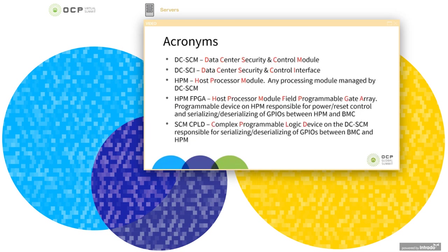Here are the acronyms. DCSEM refers to the Data Center Security and Control Module. DCSEI is the Data Center Security and Control Interface — the standardized connector interface of the SCM module. HPM is basically the motherboard or the host processing module managed by the DCSEM. The HPM FPGA is a programmable logic device on the HPM, typically used for power and reset control, with the added function of serializing and deserializing the GPIOs between the HPM and the BMC. The SCM-CPLD is a programmable logic device on the SCM, responsible for serializing and deserializing the GPIOs between the HPM and the SCM, and also performs some management functions on the SCM.